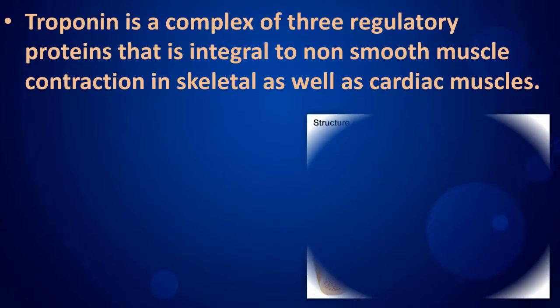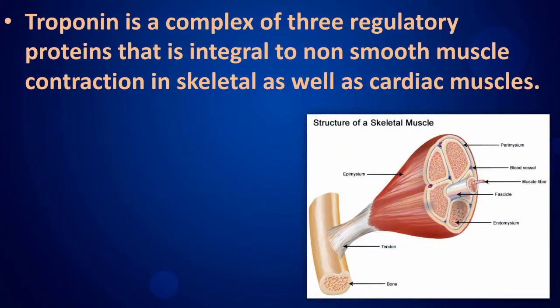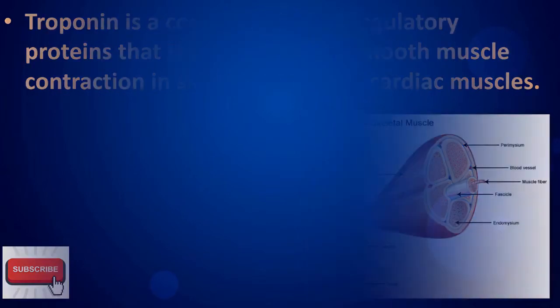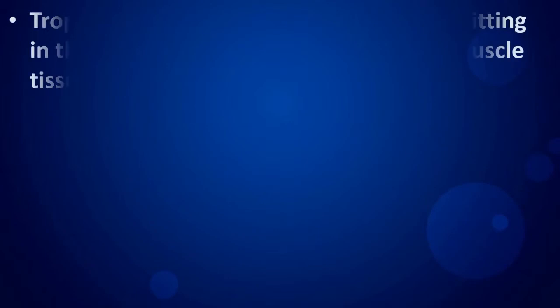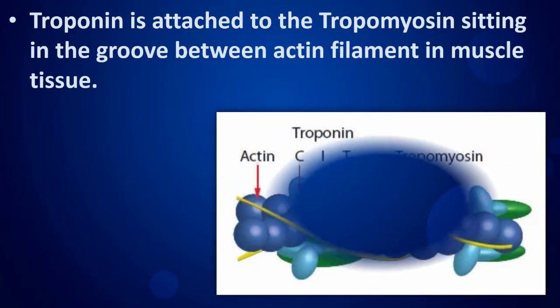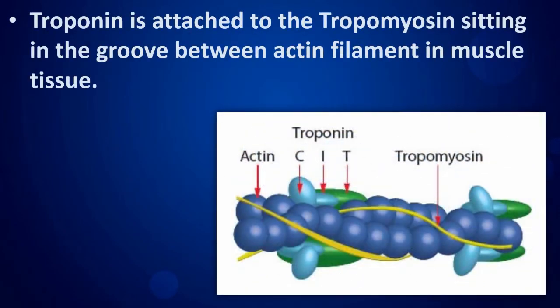Troponin is a complex of three regulatory proteins that is integral to non-smooth muscle contraction in skeletal as well as cardiac muscles. Troponin is attached to the tropomyosin, sitting in the groove between actin filaments in muscle tissue.